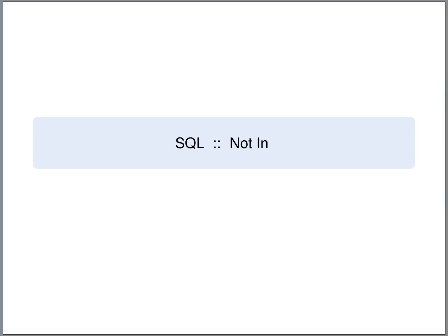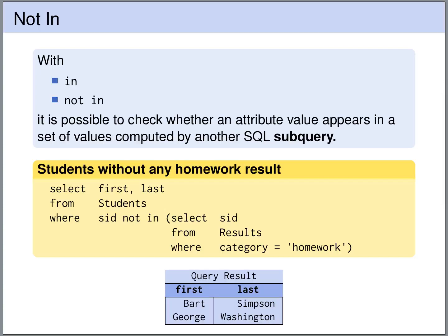The SQL operator NOT IN can be used to check whether an attribute value does not appear in the result of a subquery. In SQL we have operators IN and NOT IN that we can apply to check whether a value appears or does not appear in the result of a subquery. Here you have an example that we check whether the SID of a student that we are currently looking at appears in the result computed by this subquery.